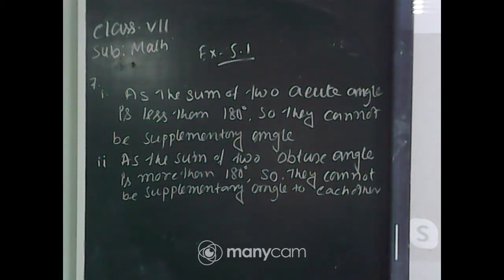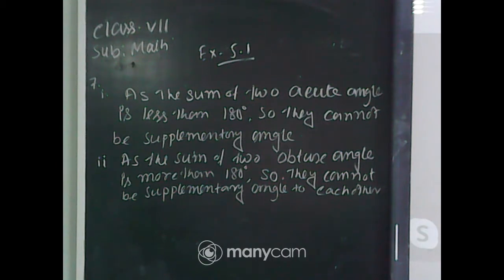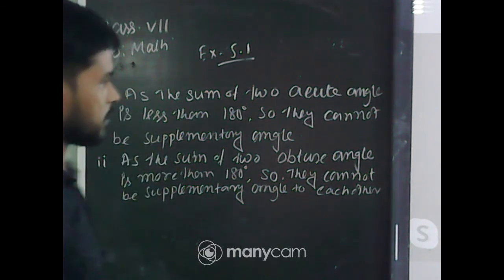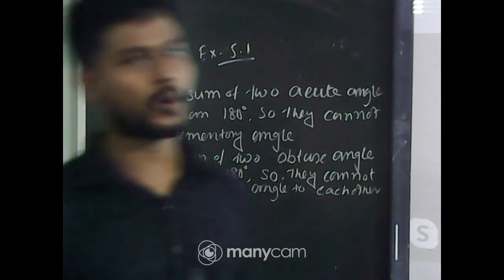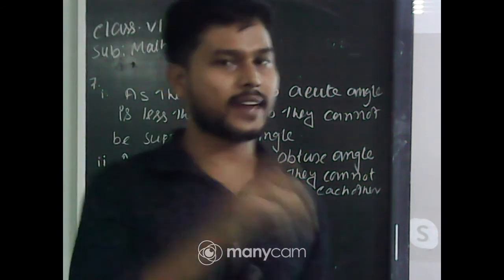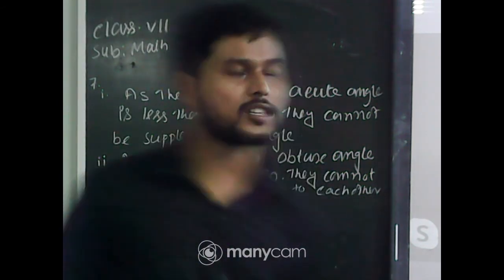Now the last part: if both the angles are right angles, what happens? The result will obviously be 180 degrees — 90 plus 90 is equal to 180. Means the sum of 2 right angles is equal to 180 degrees, meaning 2 right angles are supplementary angles to each other.